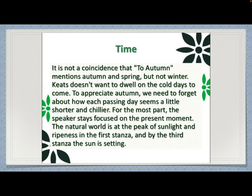Another theme is time. In the poem both autumn and spring are mentioned, but winter is not mentioned, because this is a hopeful poem and Keats doesn't want to talk about winter yet. When we appreciate autumn we should forget how every day is getting shorter and chillier, because the speaker has focused on the present moment and is not thinking about what the future might bring. The natural world full of sunlight and ripeness is shown, and even the last stanza's setting sun is not shown sadly or dejectedly.